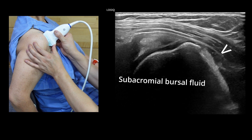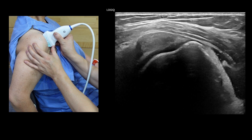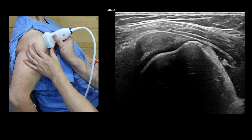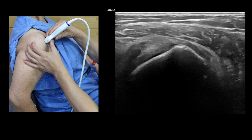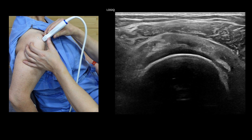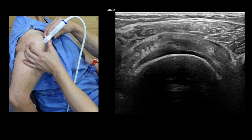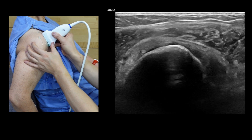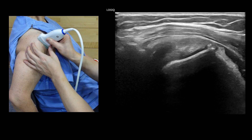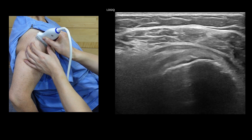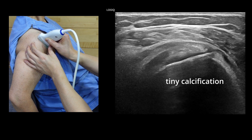This image is the typical echo texture of the bursal side tear of the anterior supraspinatus tendon in the footprint area of the tendon. I will rotate the probe to observe the torn area on the transverse view. You might think it is the articular side tear when I put the probe in the distal area, but it is the typically bursal side footprint torn tendon. I found tiny nodular echogenic calcification in the posterior part of the supraspinatus tendon.